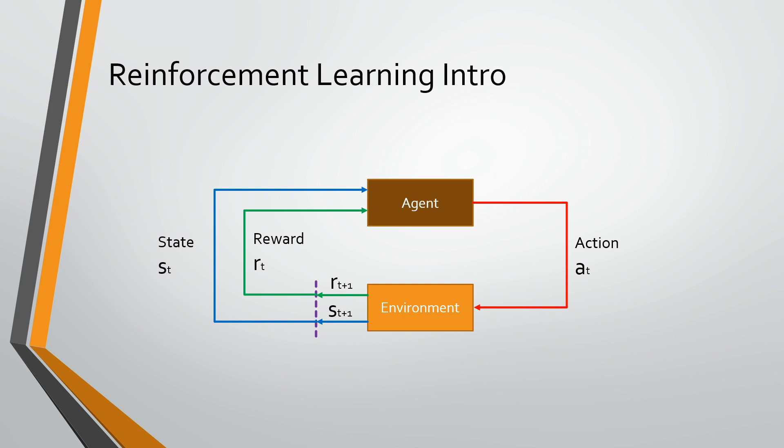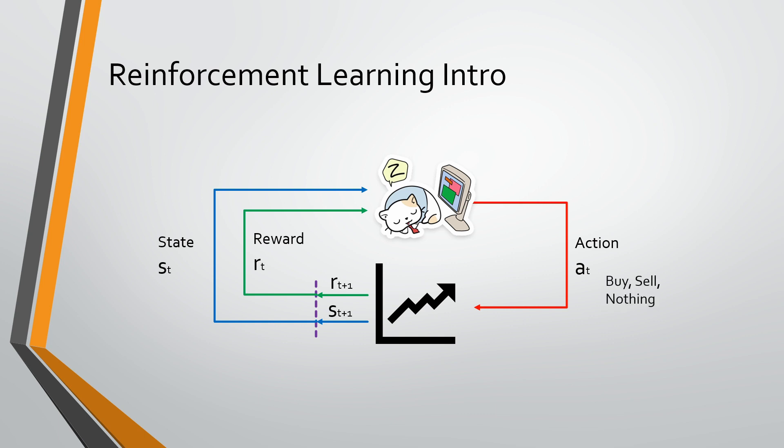You can imagine a trader who is sitting in front of a monitor, buying and selling stocks. So, the trader is the agent and chart price and broker are environment. The agent observes the current environment states and takes an action. For example, buy a stock, and immediately he receives a reward as broker's fees.